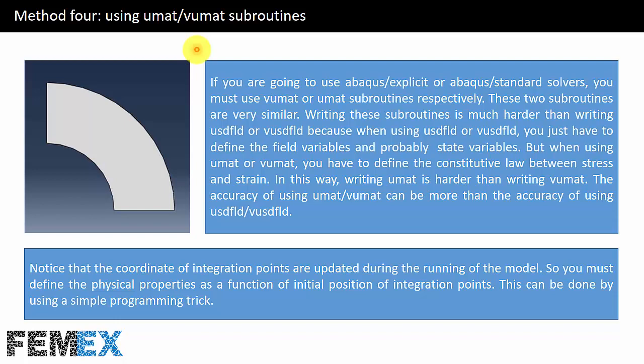Now I want to talk about method four, that is using UMAT or VUMAT subroutines. If you are going to use Abaqus Explicit or Abaqus Standard solvers, you must use VUMAT or UMAT subroutines respectively. These two subroutines are very similar. Writing these subroutines is much harder than writing USDFLD or VUSDFLD, because when using USDFLD or VUSDFLD you just have to define the field variables and probably state variables, but when using UMAT or VUMAT you have to define the constitutive law between stress and strain.